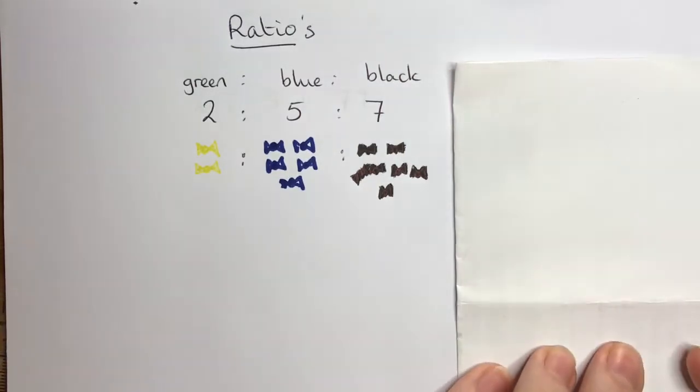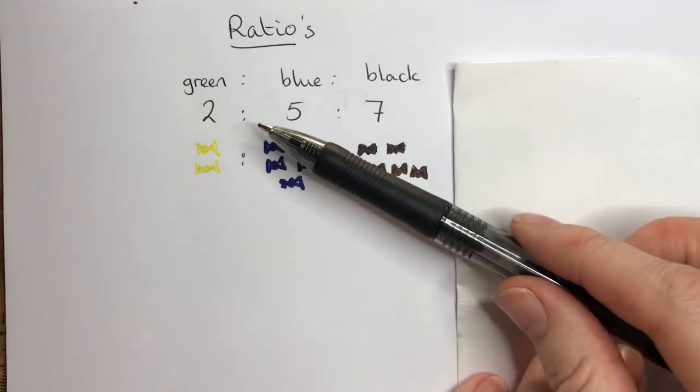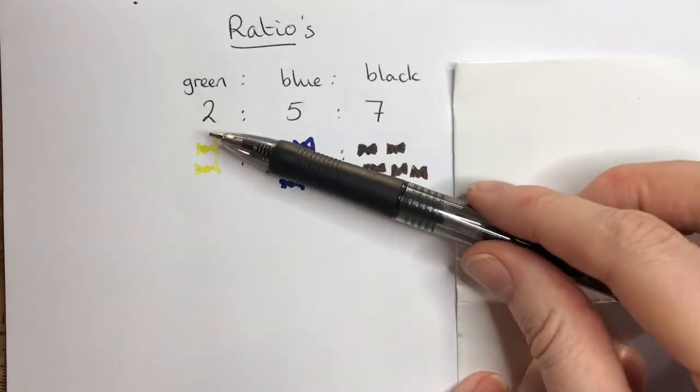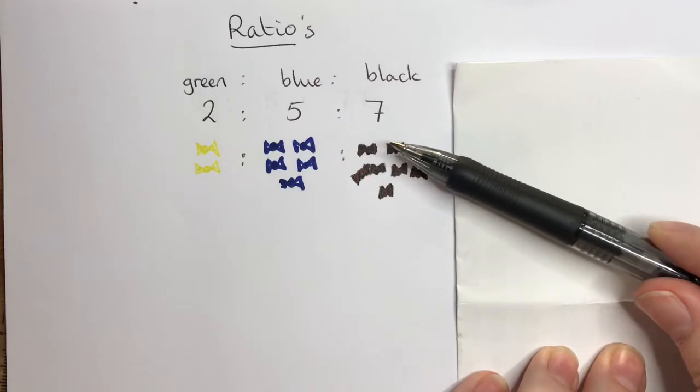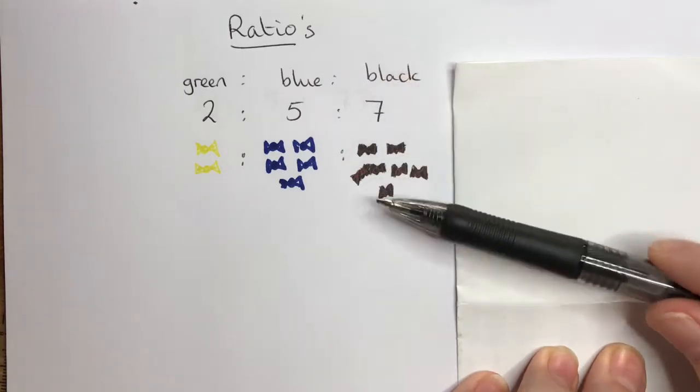Here's a quick question on ratios. We've got sweets in a bag: two green sweets to the ratio of five blue sweets to the ratio of seven black sweets.